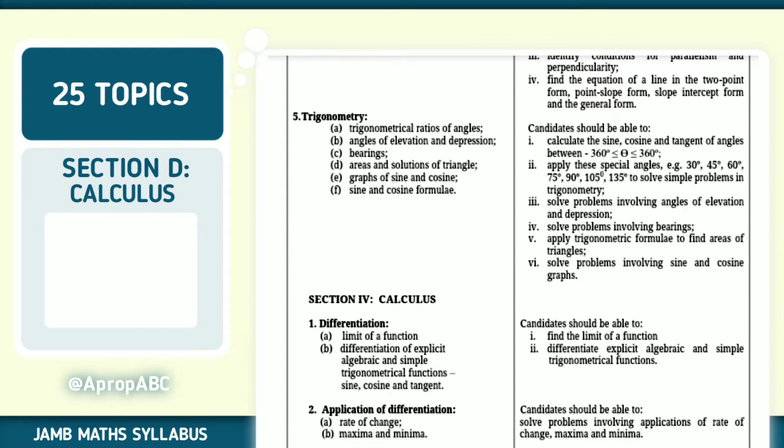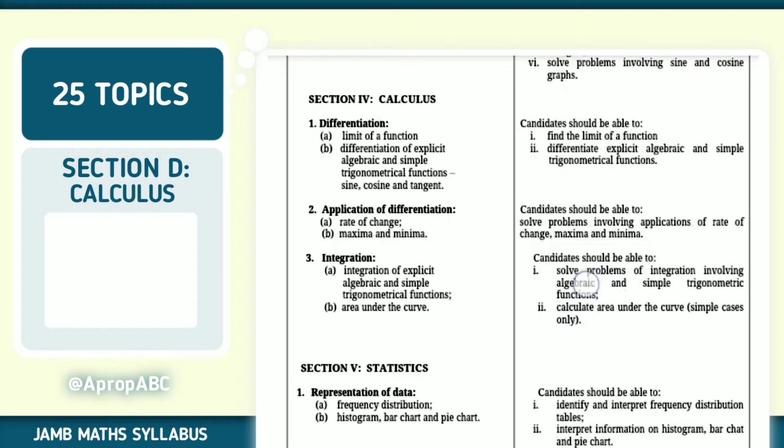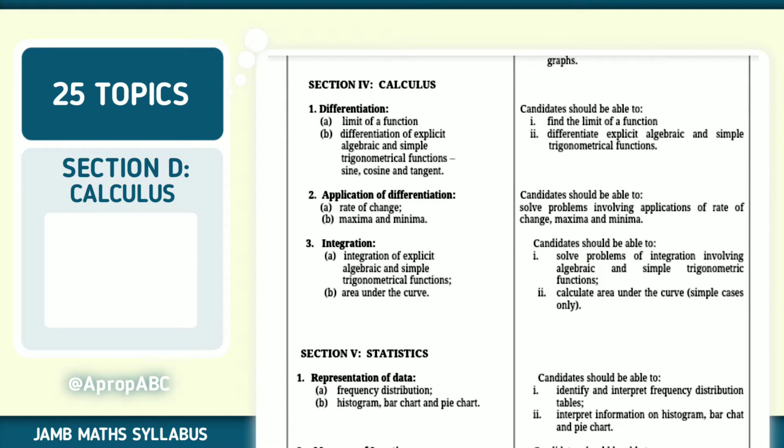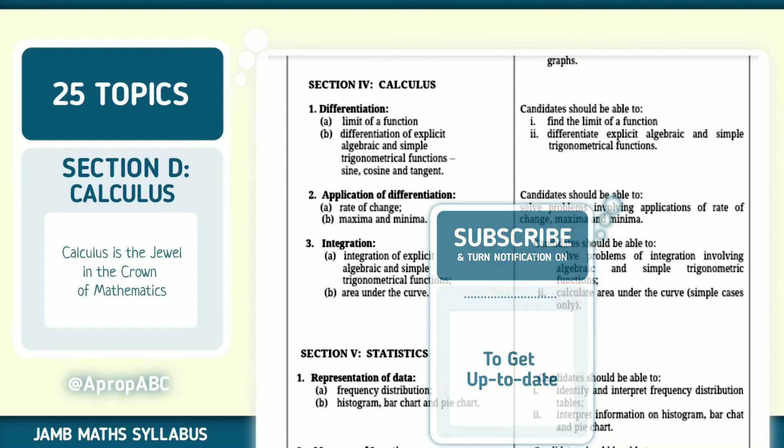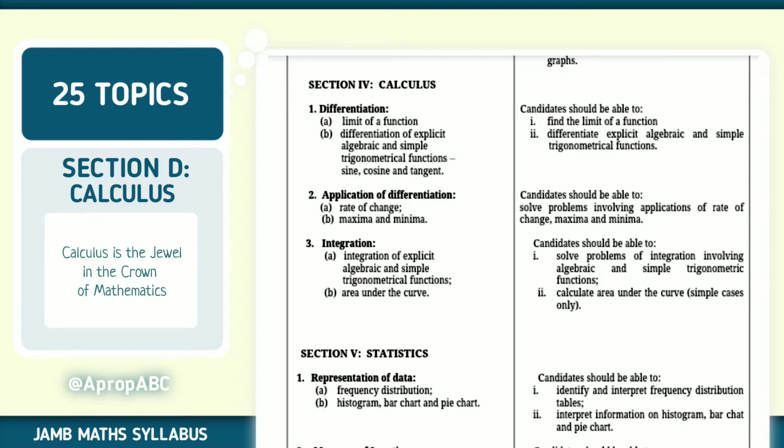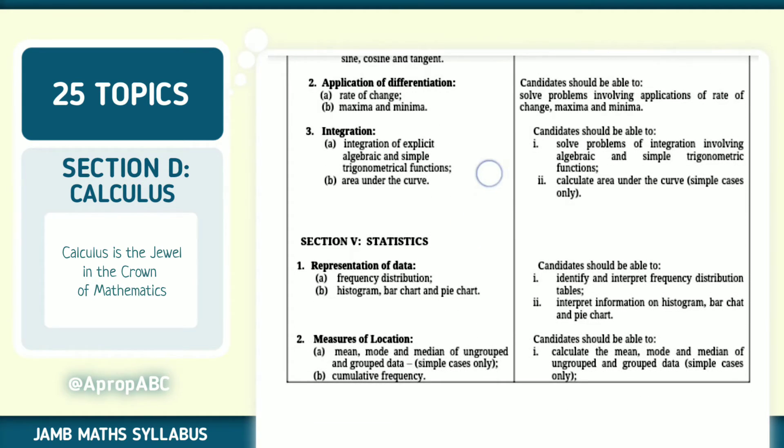The fourth section for JAMB syllabus is Calculus. You should know that calculus is the jewel in the crown of mathematics. If you're going into the scientific or technological world, you need calculus because it is very important. Topics include differentiation, application of differentiation, and integration.